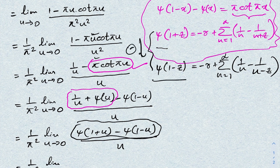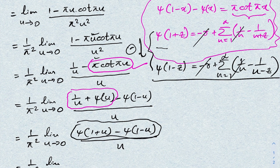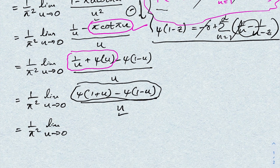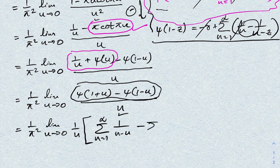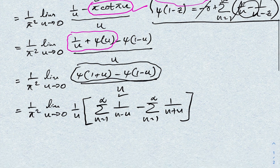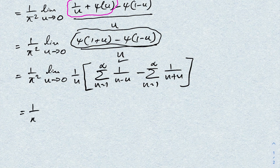Subtracting ψ(1−u) from ψ(1+u), the −γ terms and the 1/n terms cancel. We are left with ψ(1+u) minus ψ(1−u) equals Σ(n=1 to ∞) of (1/(n−u) minus 1/(n+u)).